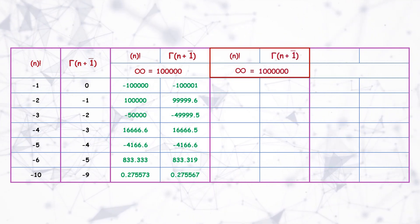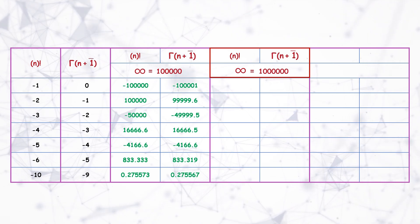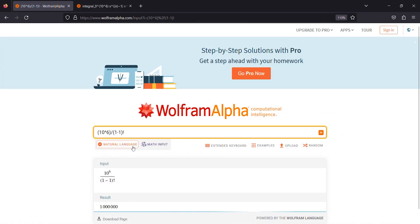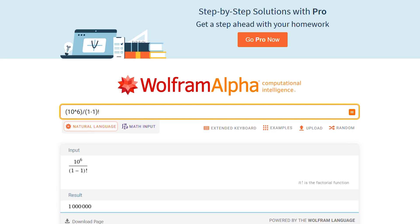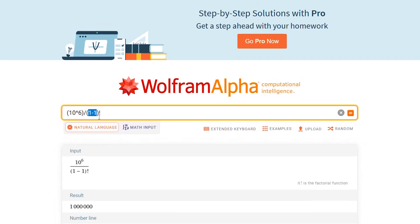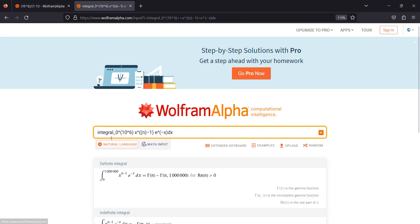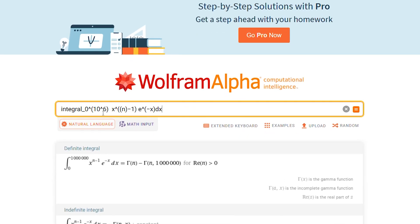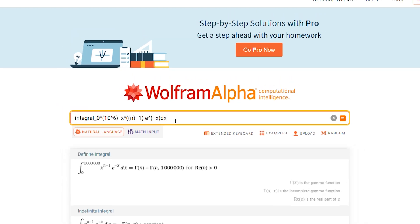And the value of infinity is 10 to the power 6 for this next iteration. To calculate this I have used Wolfram. In one tab I have factorial function, infinity by n minus 1. And in another tab I have gamma function: integral 0 to infinity, x to the power n minus 1, e to the power minus x dx.